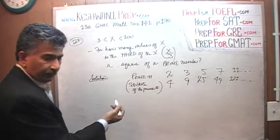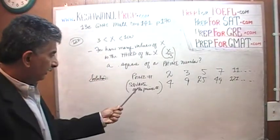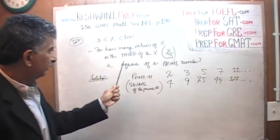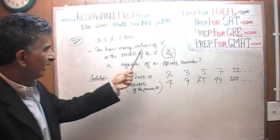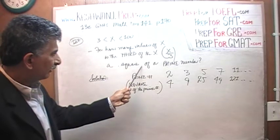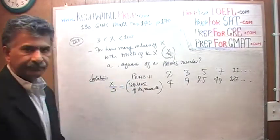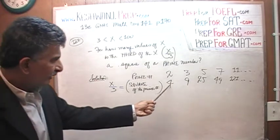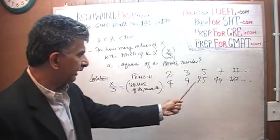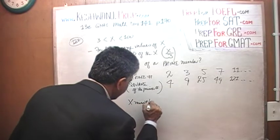This square of the prime number — listen carefully, it's just a matter of understanding the wording, the rest is very simple — this square of the prime number has to equal one-third of X. So if these numbers represent one-third of X: 4 is one-third of X, 9 is one-third of X, 25 is one-third of X...